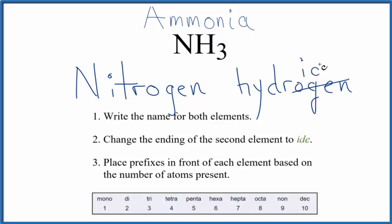and write I-D-E. So now we have nitrogen hydride. Finally, we'll write prefixes and put those in front of each element based on the number of atoms present.